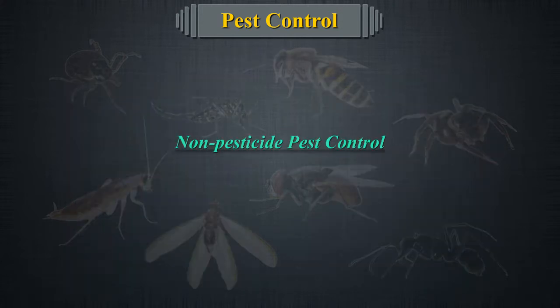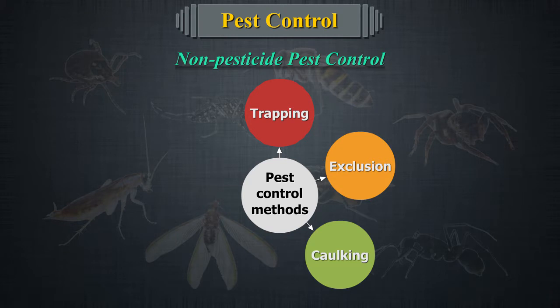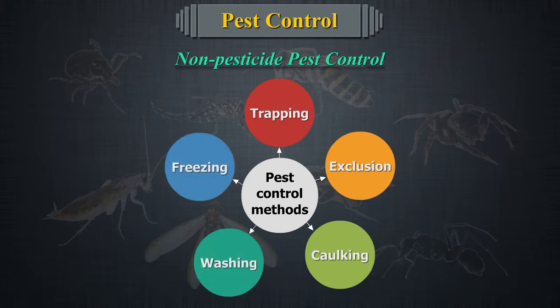Non-pesticide pest control. Pest control methods such as trapping, exclusion, caulking, washing, and freezing can be applied safely and effectively when used in conjunction with proper sanitation and structural repair.